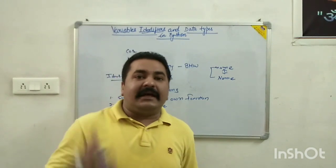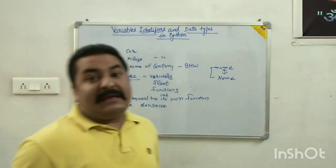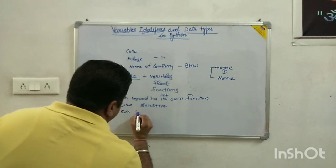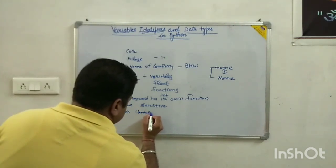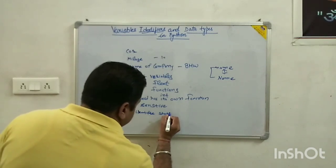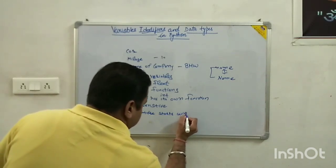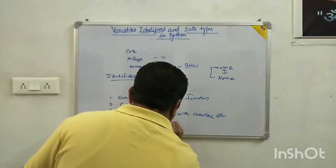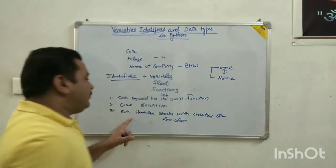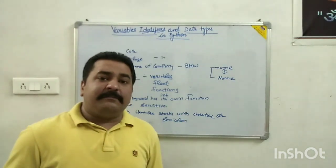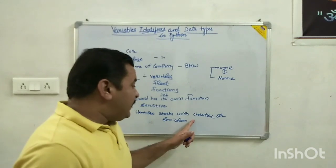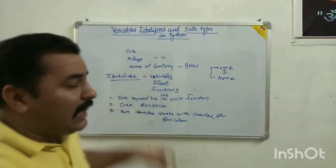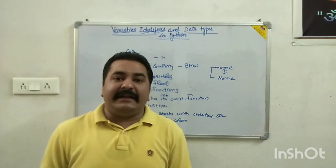Rule number three: each identifier starts with a character or an underscore, and these characters may be uppercase or lowercase. So each identifier starts with a character or an underscore, and we can use uppercase or lowercase alphabets.